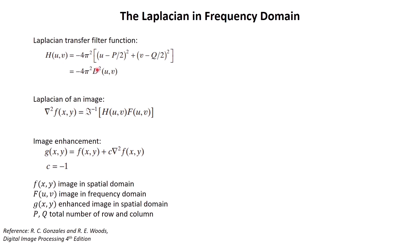The first equation here is the Laplacian transfer filter function. We use this filter to create a Laplacian of an image by multiplying the Laplacian filter with our image in frequency domain and taking the inverse Fourier transform. Then we add our original image with the Laplacian image and we get our enhanced image.